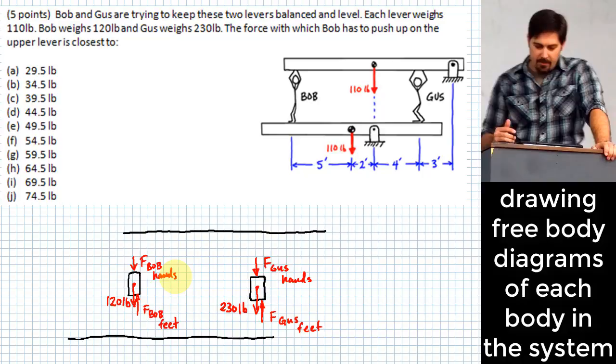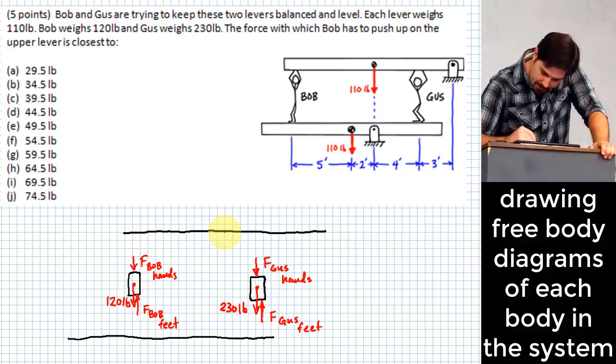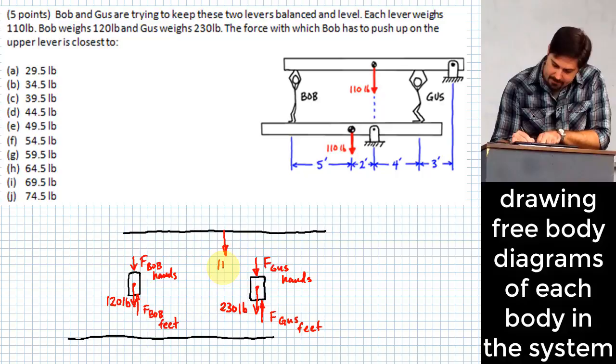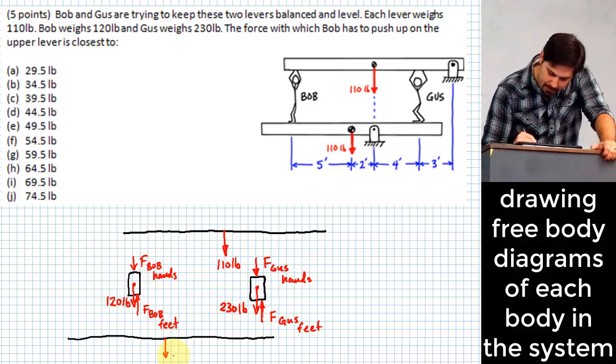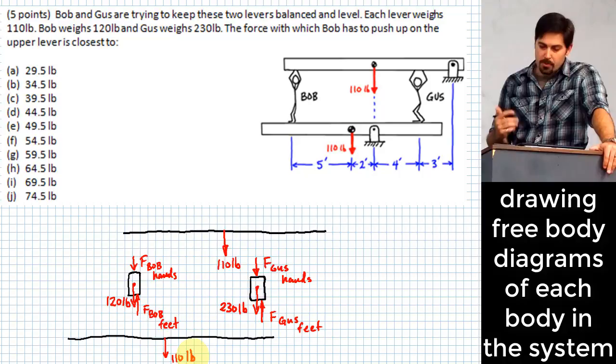What else? We have the weight of the beams, which happen near the center of the beams, right? So right here in the middle, I have the weight 110 pounds. Then what? The other beam as well. So over here in its center, I have 110 pounds.